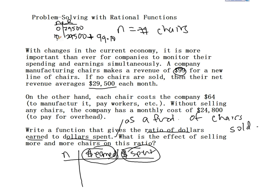So how do we calculate that? Revenue is your base revenue — what you make each month from other items — plus $99 times the number of chairs you sell. There's our revenue function, so we can determine how much you would make if you sold 1,000 chairs.